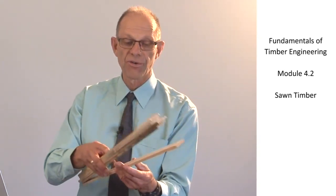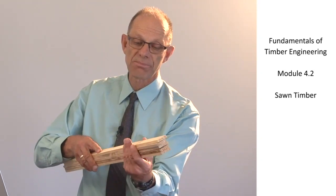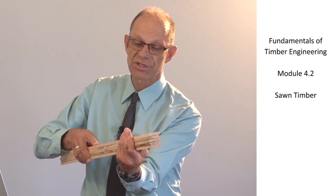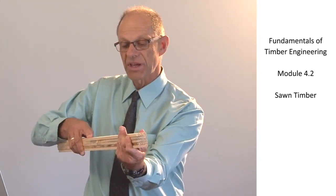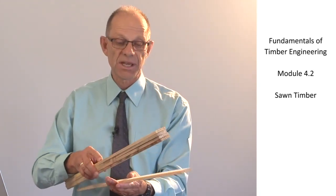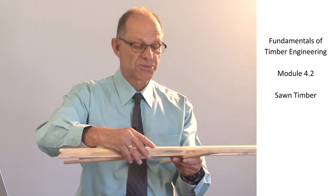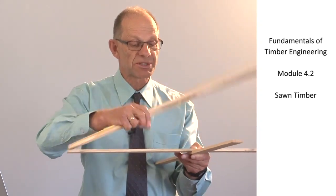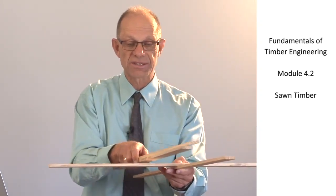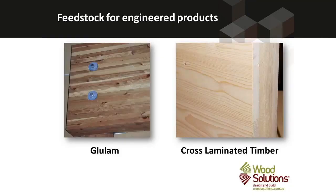This is a model of the way in which glued laminated timber works — pieces of sawn timber all laid up with their grain in the same direction. Cross laminated timber is made by taking sawn timber and gluing them together in alternate layers to make up large panels. In each case, the raw material is sawn timber.